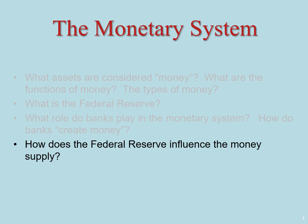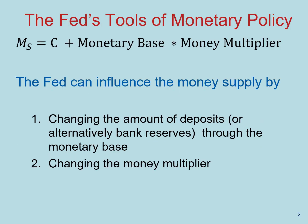On this video, let's think about how the Federal Reserve influences the money supply. To understand the tools that the Federal Reserve has to influence the money supply, let's think about our equation for the money supply. That was equal to currency plus deposits, and deposits are simply the monetary base times the money multiplier.